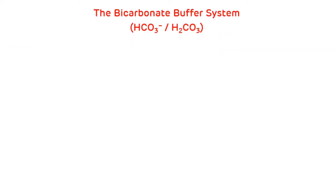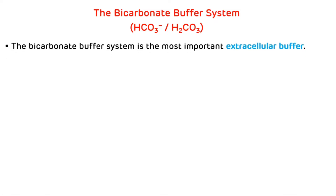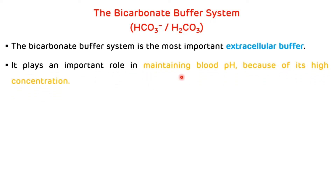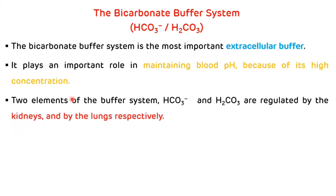The bicarbonate buffer system is the most important extracellular buffer, but its buffering capacity is relatively low because its pKa value is around 6.3. However, it plays an important role in maintaining blood pH because of its high concentration. Importantly, the two elements of the bicarbonate buffer system — bicarbonate and carbonic acid — are regulated by the kidneys and by the lungs, respectively.